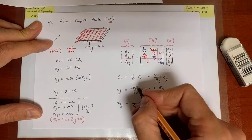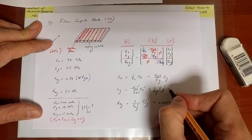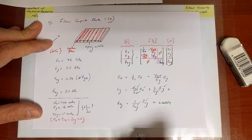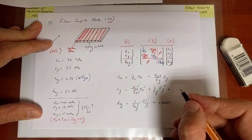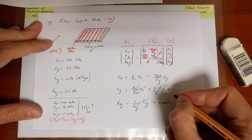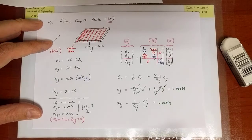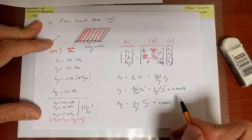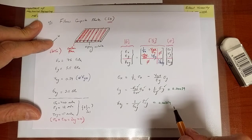Moreover, nu_xy is provided, Ex, Ey, sigma_x, sigma_y are provided. You can make those substitutions as well, and you would find that epsilon_y is equal to about 0.00039 or 390 microstrains if you like. On the other hand, in order to calculate epsilon_x.